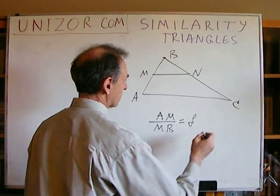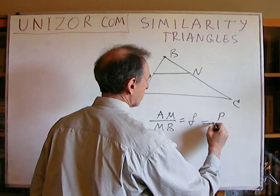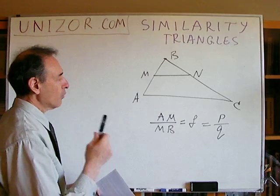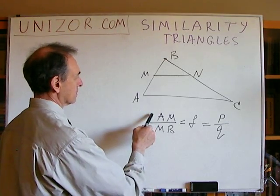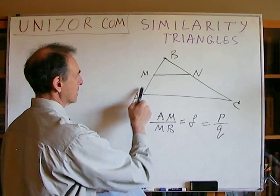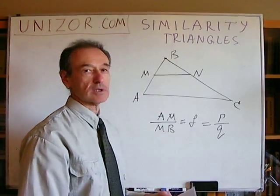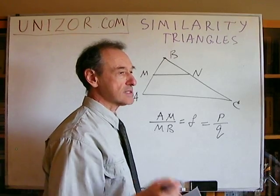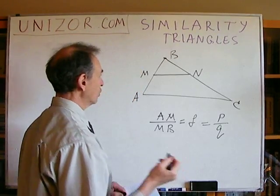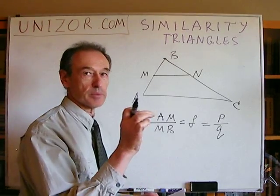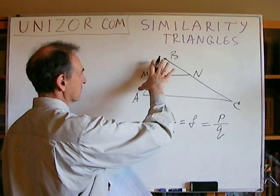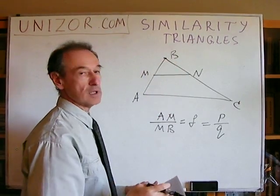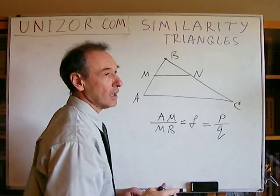Let's assume that this factor is some rational number P over Q. What does it mean that the ratio between the length of AM and the length of BM is the rational number P over Q? It means that there is some unit segment which would fit P times in AM and Q times in BM.